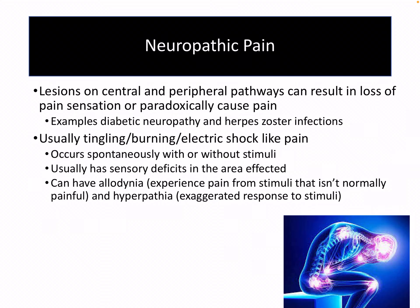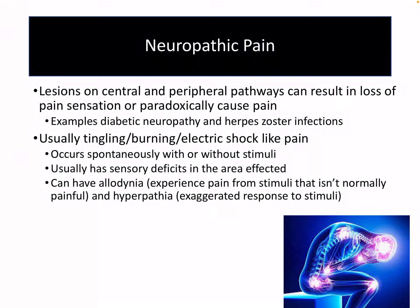Neuropathic pain is associated with damage to the nerves, whether in the central or peripheral pathways. It usually results in loss of pain and sensation, but also a paradoxical increase in pain — the nerves are still firing off pain signals even though you might not have sensation in that extremity. Think about diabetic peripheral neuropathy: patients may have painful feelings in their feet, yet during a foot exam they're not sensing all those sensations. This is usually a tingling, burning, or electroshock-like pain that can occur spontaneously without stimuli. You can also have allodynia — where you experience pain from stimuli that's not normally painful, such as patients saying that their socks or shirt is hurting them.